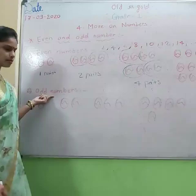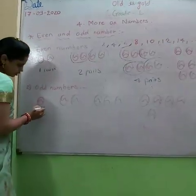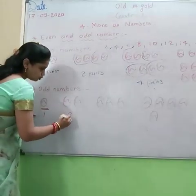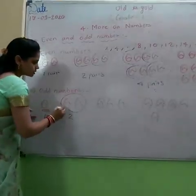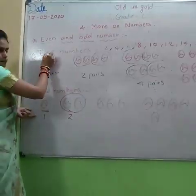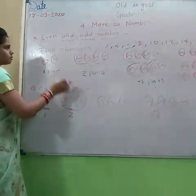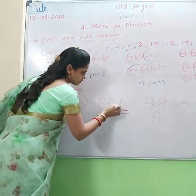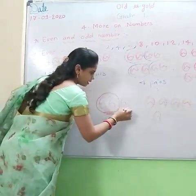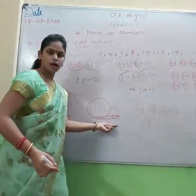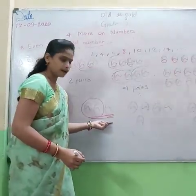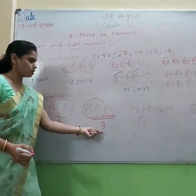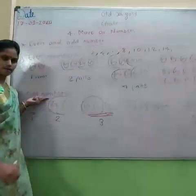Now see what is meant by odd numbers. Here it is only 1 ball. Here 2 balls — it is an even number, this 1 pair means it is even number. And see, here 3 balls — 1 pair and 1 ball. It cannot have a pair. So 3 balls means 3 is an odd number.